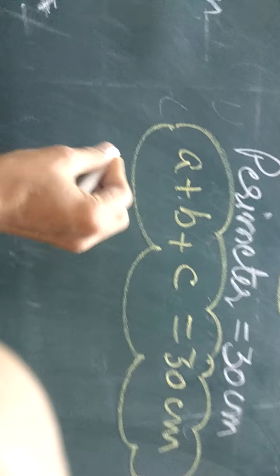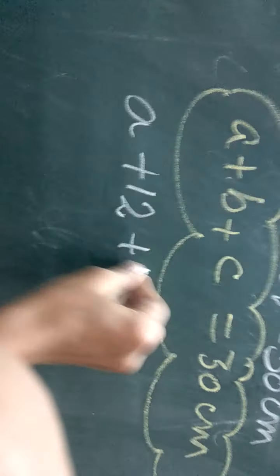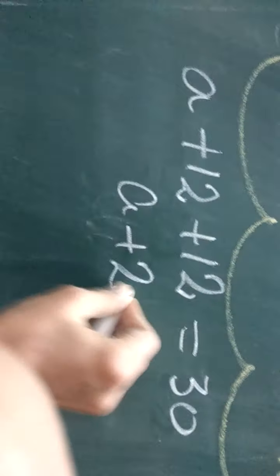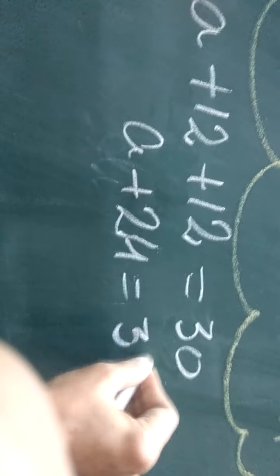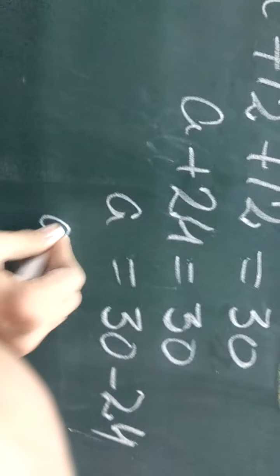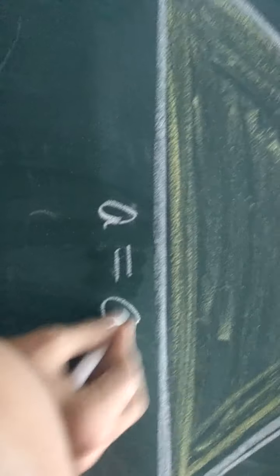By putting the values in this, we will get the value of the third side. A plus 12 plus 12 equals 30. So A plus 24 is equal to 30. A is equal to 30 minus 24, and A is equal to 6 cm. So dear students, in this way we get the third side equal to 6 cm.